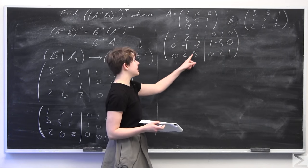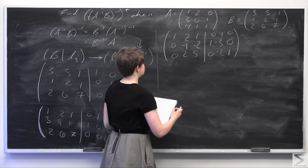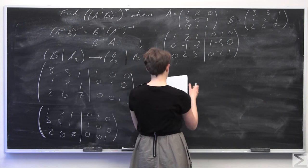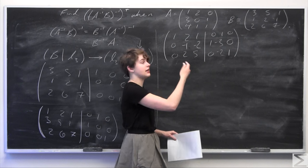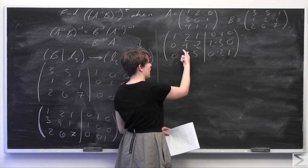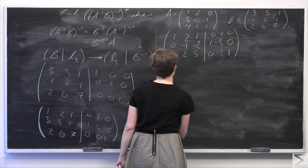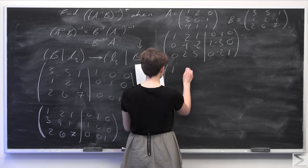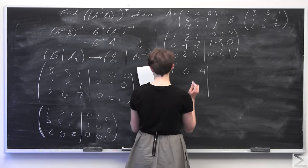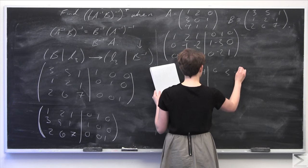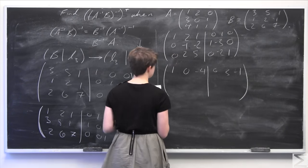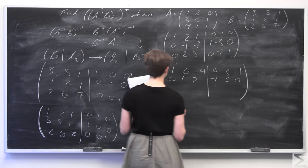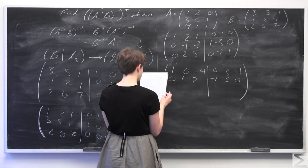Now we want to clear out the second column to get a leading one. I'm going to subtract the third row from the first row to clear the 2, and multiply the second row by -1 to get the leading one. We get: row 1: 1, 0, -4 | 0, 3, -1. Row 2: 0, 1, 2 | -1, 1, 0. The final row stays the same: 0, 2, 5 | 0, -2, 1.